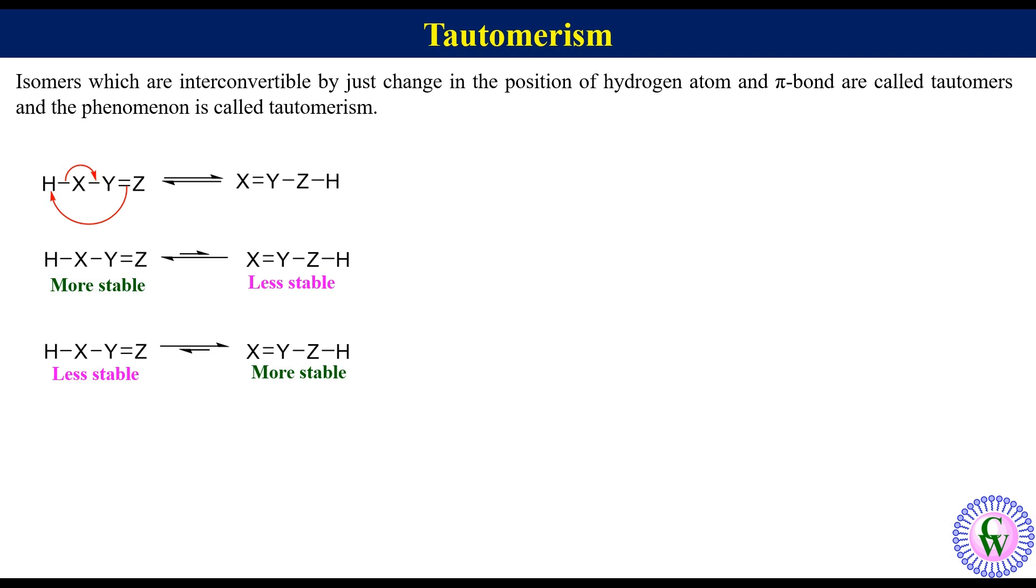The first is keto-enol tautomerism. In this the first example we are going to take is acetone. This is the keto form of acetone. It has enolizable alpha hydrogen. The relocation of alpha hydrogen like this will give enol form.